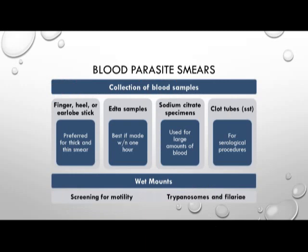For blood samples collected in the clinical lab, smears can be performed. Finger, heel, or ear lobe sticks are preferred for thick and thin smears. EDTA samples are best if made within one hour. Sodium citrate specimens are used for large amounts of blood. Clot tubes or SST (serum separator tubes) are used for serological testing such as immunoserological detection of the antigen-antibody complex. With a blood sample, you may also perform a wet mount, which allows for the screening of motility seen in trypanosomes or Filaria.